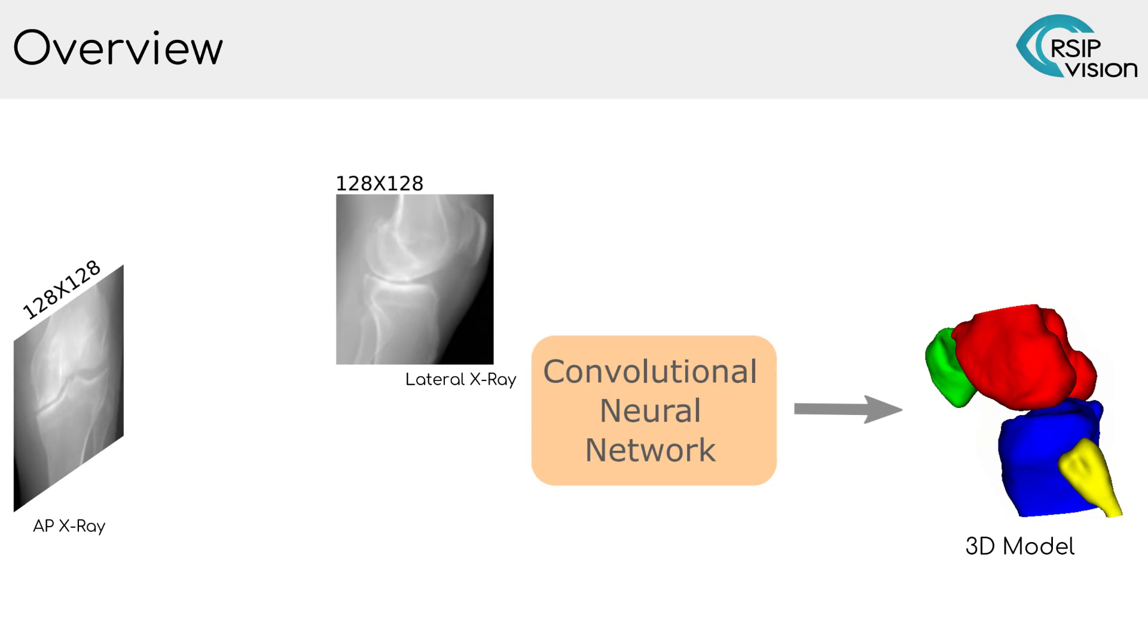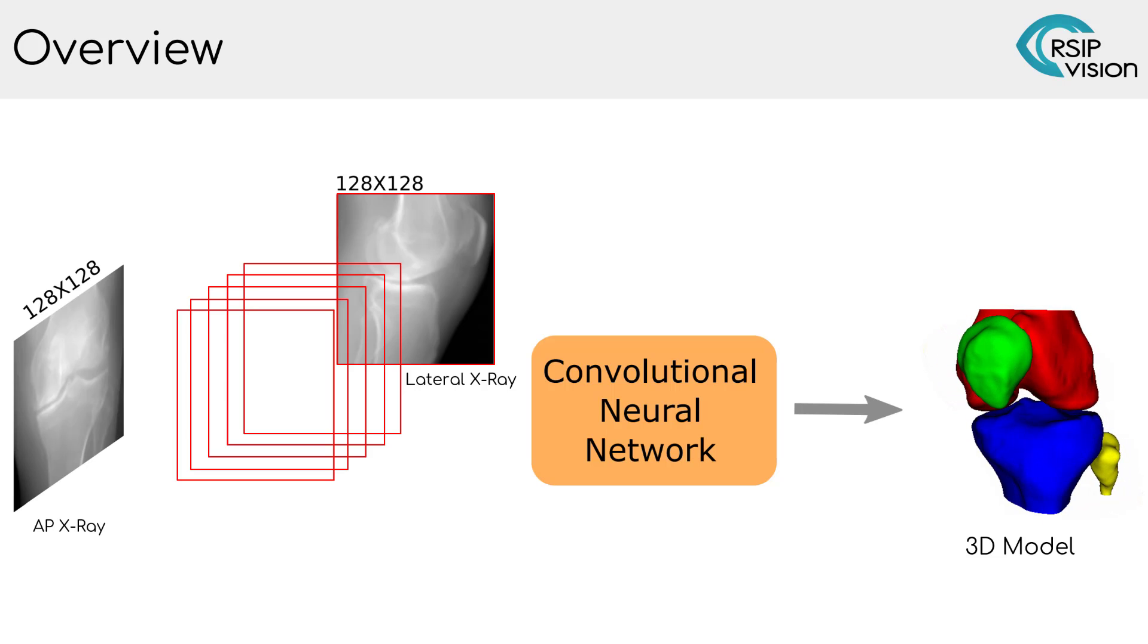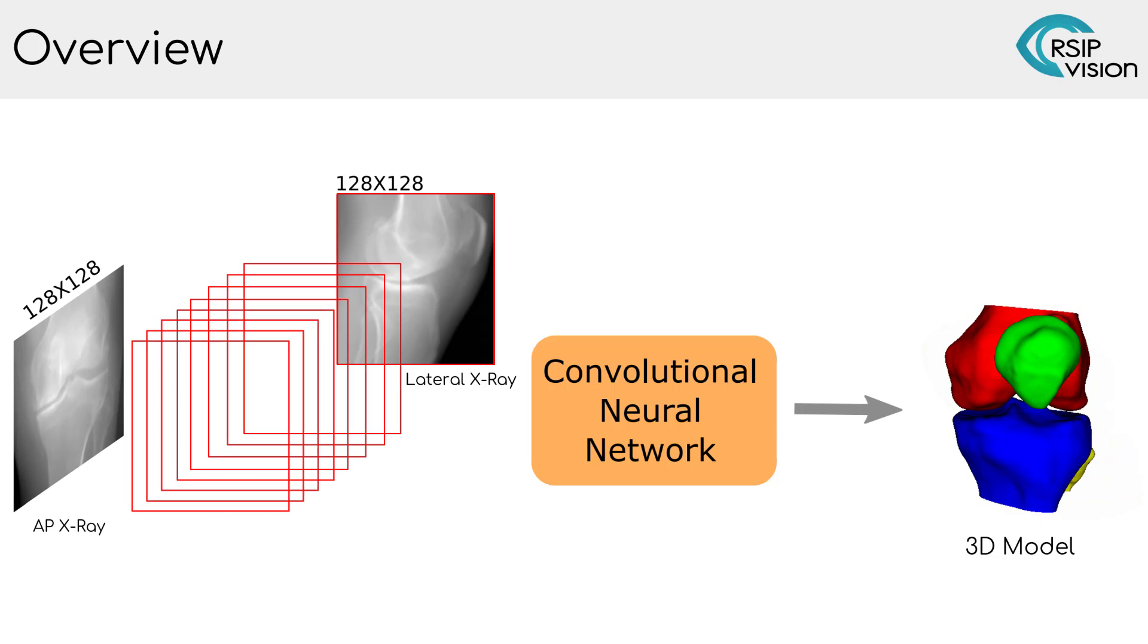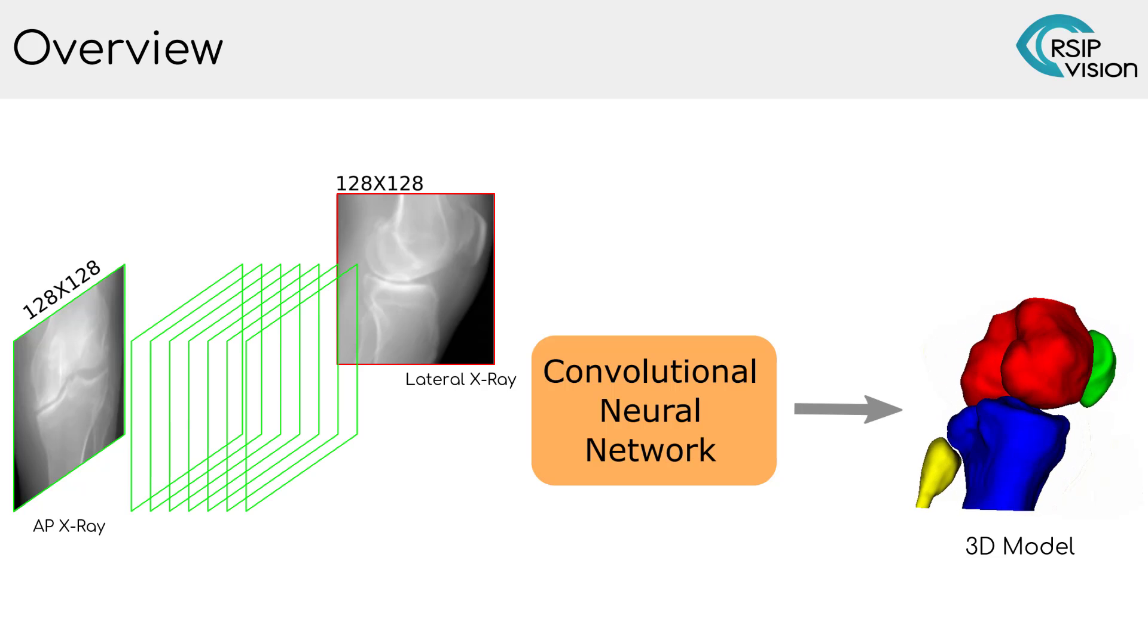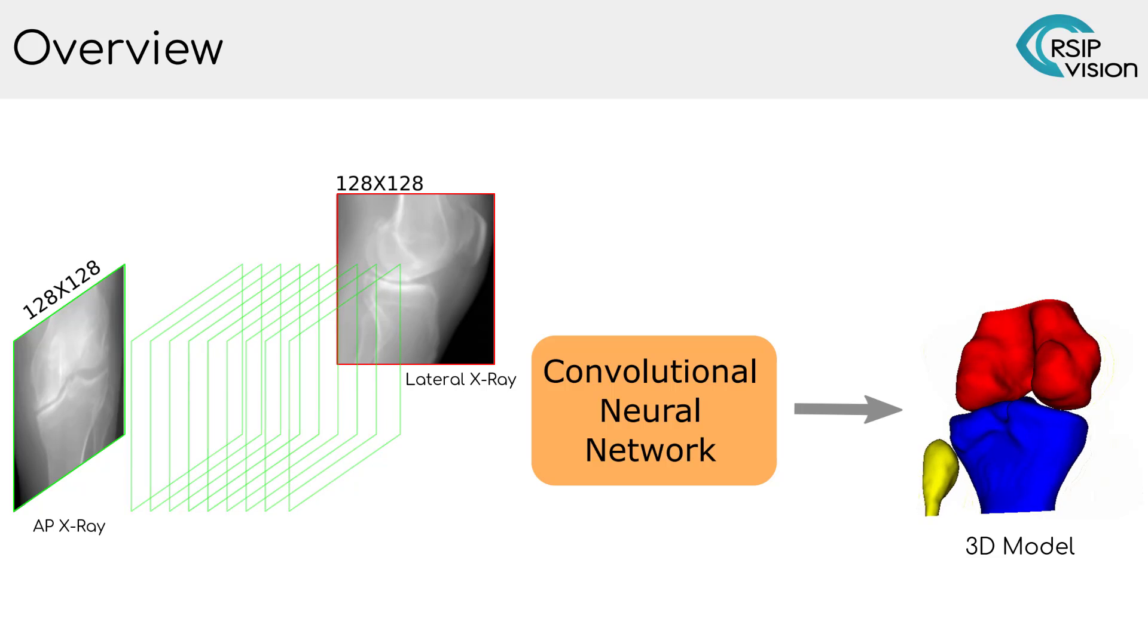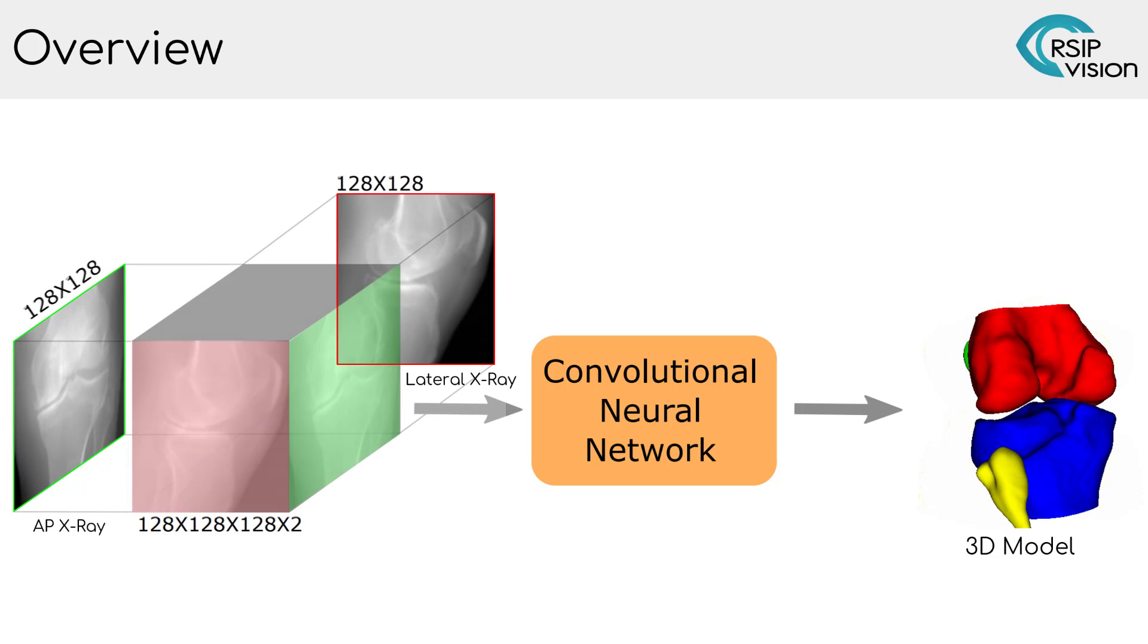We address these challenges by introducing a dimensional enlargement approach that combines two biplanar X-ray back projections of each pair of corresponding epipolar lines into a single two-channeled epipolar plane. This results in a 3D volume that contains all the information observed from the two X-ray images. We combine this representation with a deep learning architecture that outputs 3D models of the different bones.